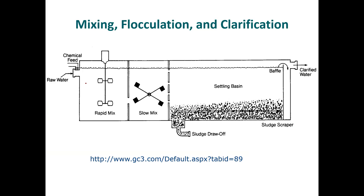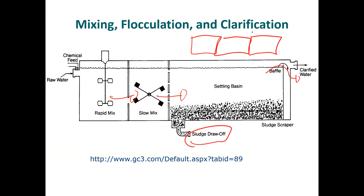This is a pretty common setup: you have a rapid mixing system at the beginning, then a slower mix, then a settling basin where sludge gets drawn off and clean water comes out. Sometimes settling basins are in tandem — basins one, two, three — so water that's murky in basin one becomes less murky in basin two, and by three it's had many chances to settle and usually becomes quite clear.